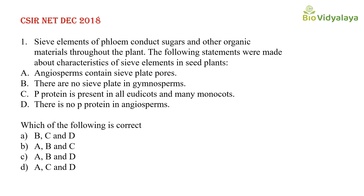Now we will discuss a CSIR NET Part C question from December 2018. The question is: sieve elements conduct sugars and other organic materials throughout the plant. The following statements were made about characteristics of sieve elements in seed plants. Statement A: Angiosperms contain sieve plate pores. Statement B: There are no sieve plates in gymnosperms. Statement C: P protein is present in all dicots and many monocots. Statement D: There is no P protein in angiosperms. Which of the following is correct?